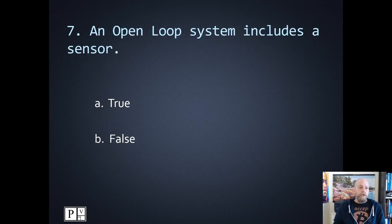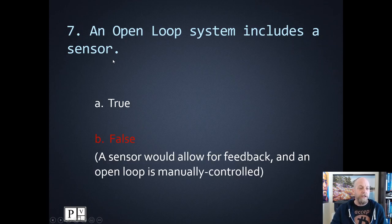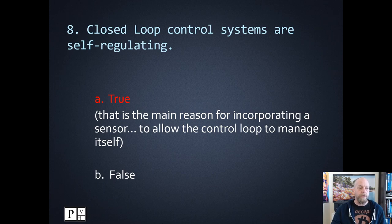Number seven: an open loop system includes a sensor. This one's quick and easy — no, it's a manually controlled loop. A sensor would allow for feedback, and an open loop is manually controlled — so that is false. Number eight: closed loop control systems are self-regulating. Closed loop means there's a sensor and a controller — that would be true. That's the main reason for incorporating a sensor: to allow the control loop to manage itself.